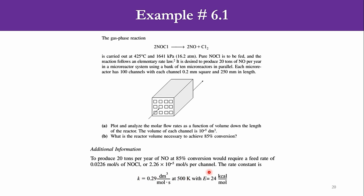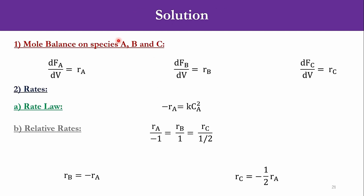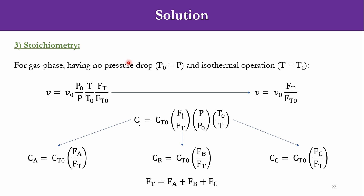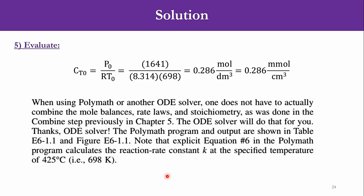The k value and activation energy value were given. We had solved mole balances on the species: dFa/dV = ra, dFb/dV = rb, and dFc/dV = rc. We wrote the rate law: minus r equals k times Ca squared. We used the relative rate principle to derive r of p and r of c, then used stoichiometry to derive expressions for concentration of A, B, and C and the total flow rate. Then we combined these and evaluated the value of ct0. Using these equations, we will now go to Polymath to find the reactor volume for 85% conversion.